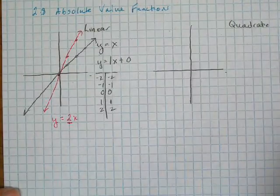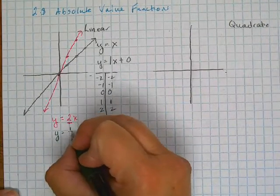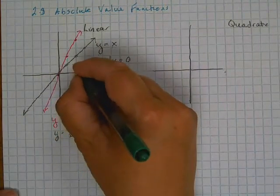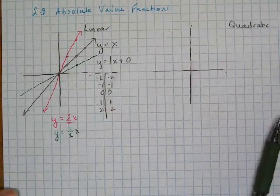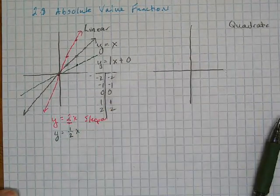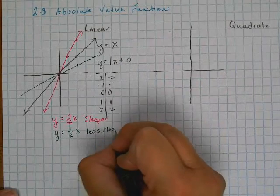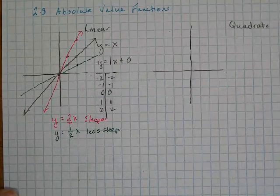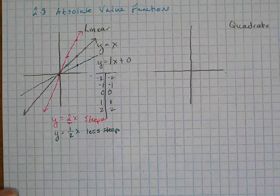If you change that number to something smaller than 1, like a half, instead of going up 1 over 1, you go up 1 over 2. So what that does is it makes this line a little less steep. The pink line was steeper, and the green line was less steep or flatter. We know that putting a number in front of the x is going to change the slope of the line. It's going to change the steepness.